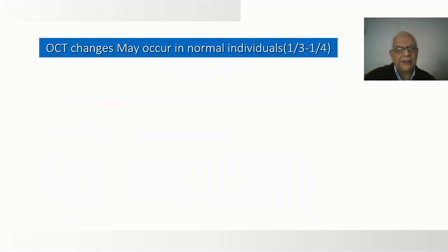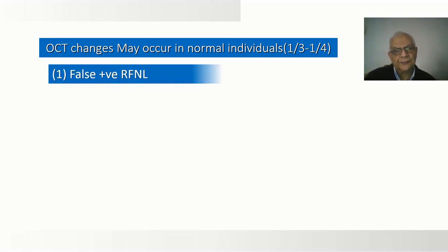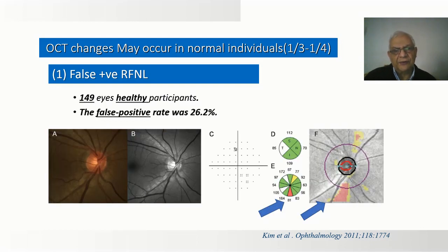Keep in mind that OCT changes may occur in normal individuals. In one study, false positive RNFL changes were found in one quarter of 150 normal healthy persons. This is one of the results where the visual field and fundus pictures are normal.